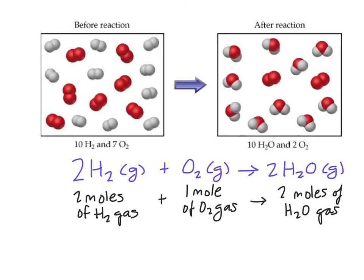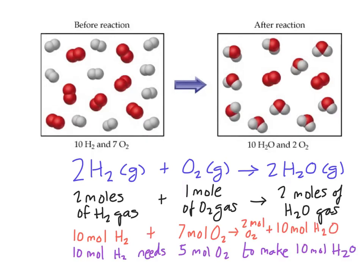So if you have 10 moles of hydrogen, and you react it with 7 moles of oxygen gas, the oxygen isn't going to be completely used up. Here's the reason why. It's because 10 moles of hydrogen gas only needs 5 moles of oxygen gas to make 10 moles of H2O.